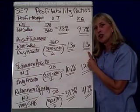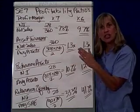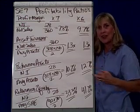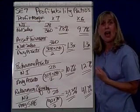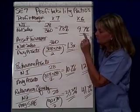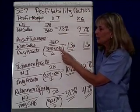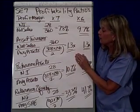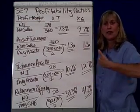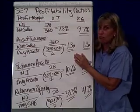The next ratio we want to do is asset turnover. Asset turnover really shows the magnification between the balance sheet and the income statement — in other words, how well are you turning your assets or refreshing your assets to increase the velocity of your profitability. Asset turnover is net sales divided by average assets. For X7, net sales are $360,000. Average assets, remember, is beginning plus ending divided by 2. That gives you an asset turnover of 1.3 times.